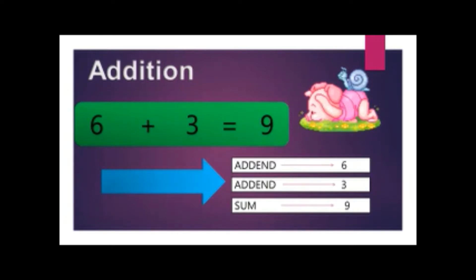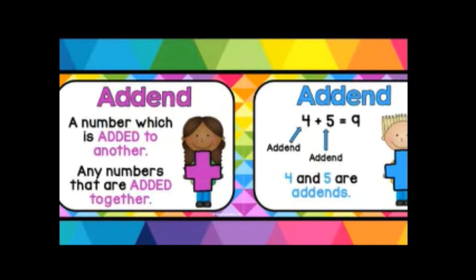So those are the parts of addition. Before we go to the next operation, we will discuss first the meaning of the parts of addition. Addend means a number which is added to another, or any numbers that are added together. Sum means total. That's the meaning of the parts of addition, so that's it for addition.